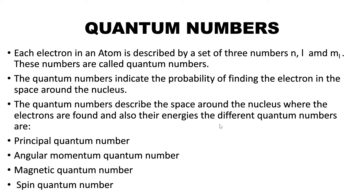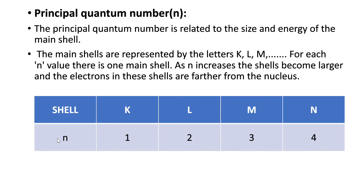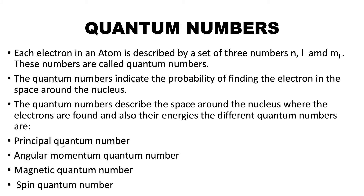The different quantum numbers are: principal quantum number, angular momentum quantum number, magnetic quantum number, and the spin quantum number.